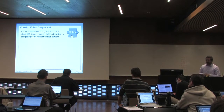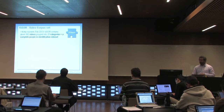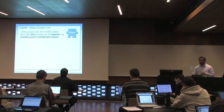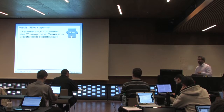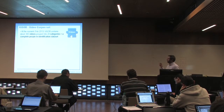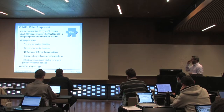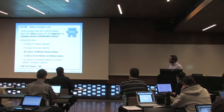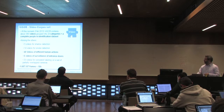VISOR is a video corpus. Currently we have about 380 videos with annotations, grouped into 20 categories. We also have a new paper identification dataset, which is outside of those statistics. Among others, we have videos for shadow detection, smoke detection, human actions, and so on — a lot of videos included in this collection.